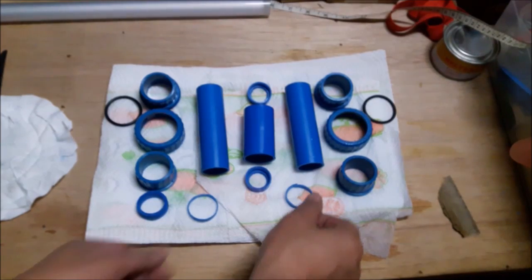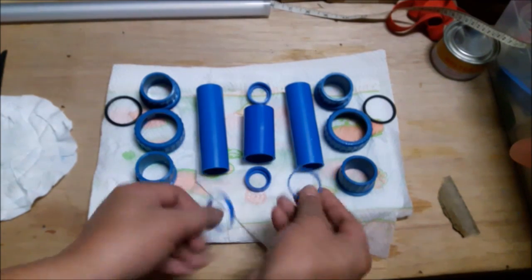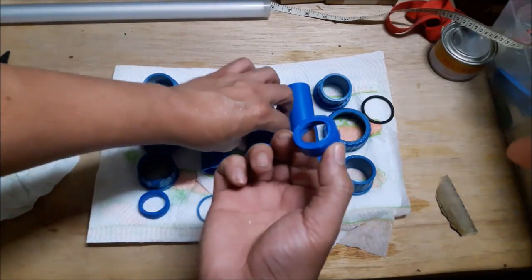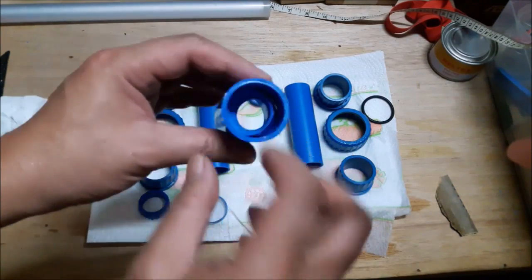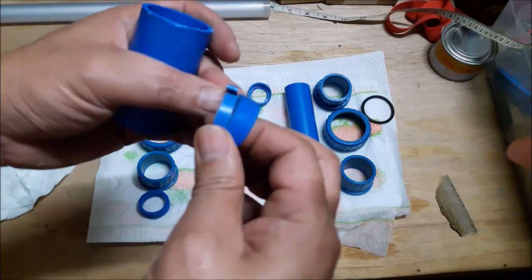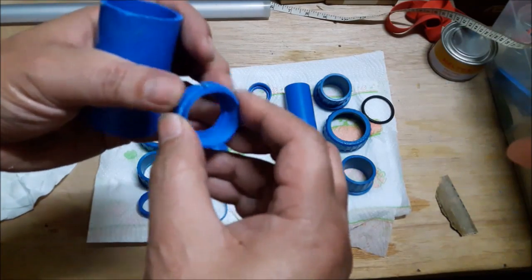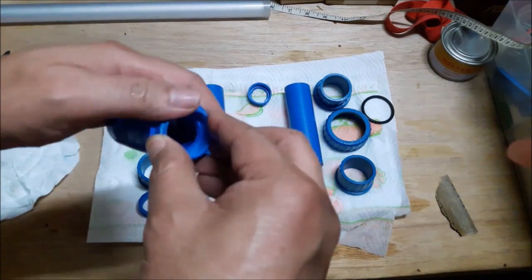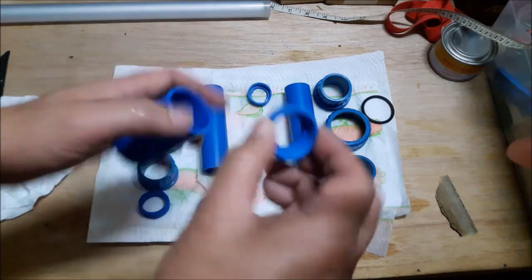So now we've cleaned the pipes, let it dry, and we're going to start to glue it together. Now if you notice, that piece is loose. So we just cut out a very thin piece of PVC so that it will hold that piece more snugly in place.